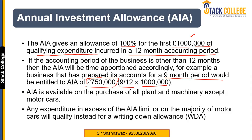The Annual Investment Allowance is available on all qualifying plant and machinery, except for one type of plant and machinery, which is the motor car. So on motor cars, AIA is not available and we have to look for a different kind of allowance.